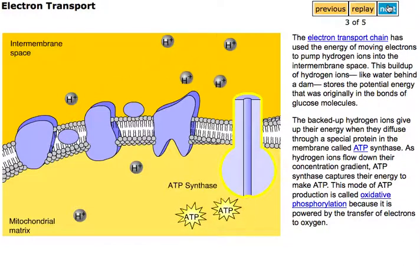This mode of ATP production is called oxidative phosphorylation because it is powered by the transfer of electrons to oxygen.